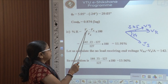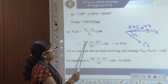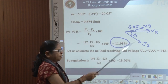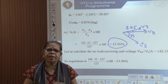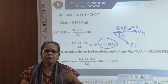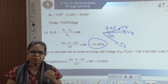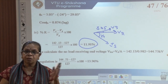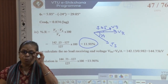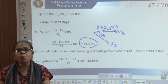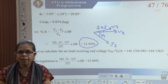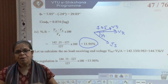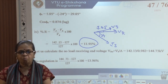Percentage regulation is (Vs − Vr)/Vr, giving 11.91%. Can you see that the regulation is higher? Higher regulation means it is bad, because it means there is a lot of difference between the sending end and receiving end voltages — so regulation is poor. A higher value of regulation implies poor regulation. This is because of the longer line — as the line length increases, the drop is more.